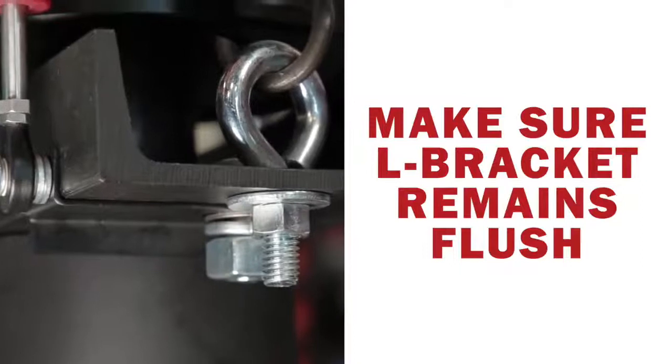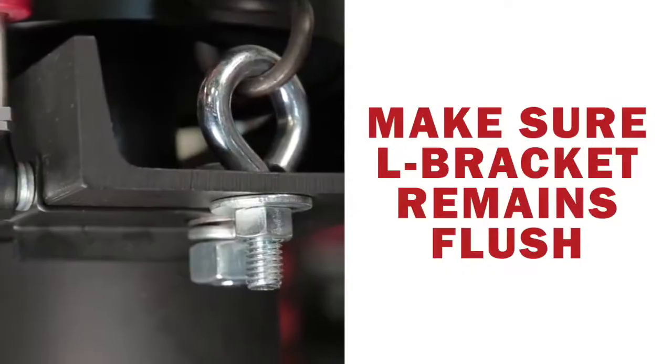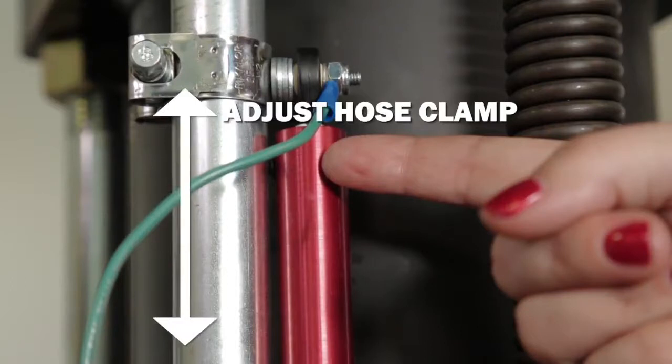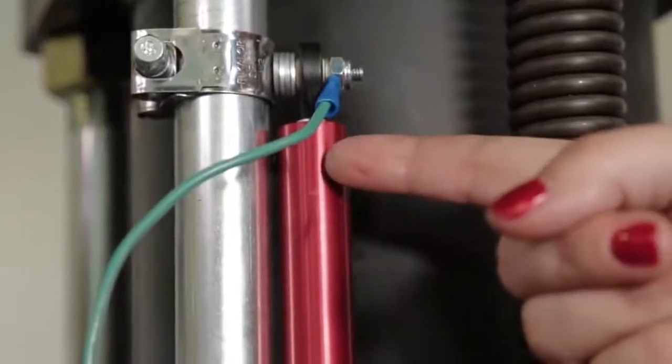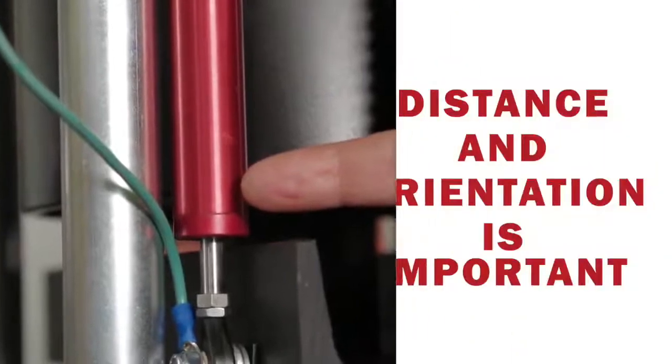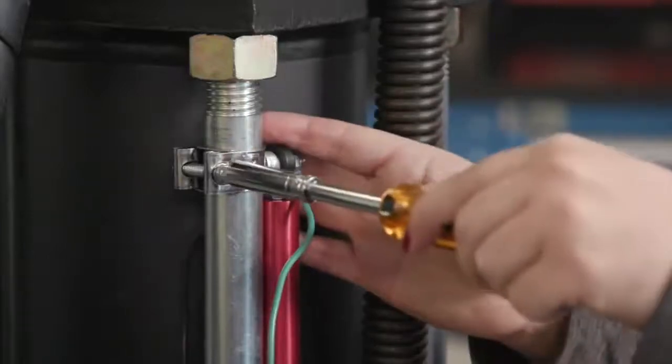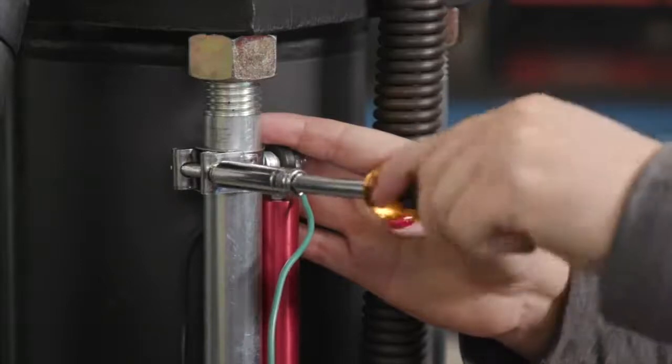It's important that the L bracket remain flush with the channel, so double check before moving on to the next step. Now let's move back to the top of the sensor assembly. Move the hose clamp so that the body of the sensor is approximately an eighth of an inch above the lip of the channel. This must be done before finalizing the positioning and fully tightening the clamp. Once you have the distance correct, double check that the body of the sensor is parallel to the crimper tie rod.